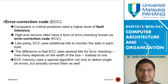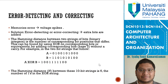For Error Correction Code (ECC), computers in critical applications need a higher level of fault tolerance. High-end servers have ECC, which uses additional bits to monitor data. Unlike parity which uses 1 bit, ECC uses several bits for error checking depending on the width of the bus. ECC memory uses a special algorithm not only to detect single-bit errors but to actually correct them. Memory errors are usually caused by voltage spikes, since data inside memory is held as voltage, and any voltage spike can damage the data.